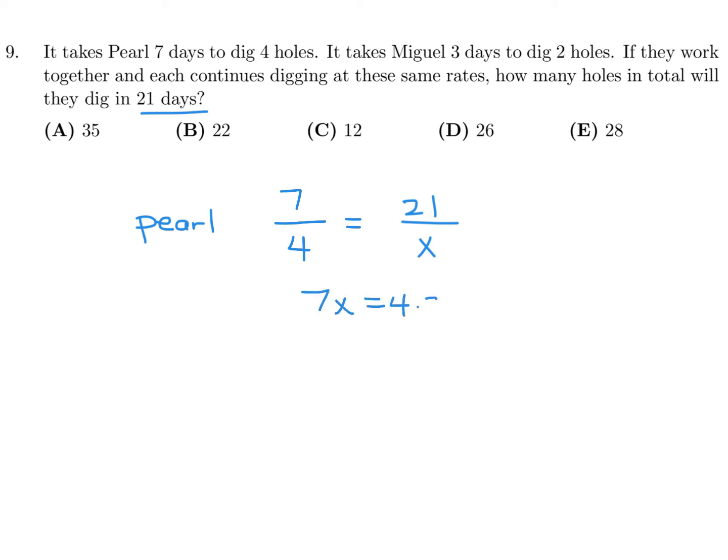7x is 4 times 21. So this looks like x is 4 times 3. And that is 12. Okay. So in 21 days, Pearl can dig 12 holes.